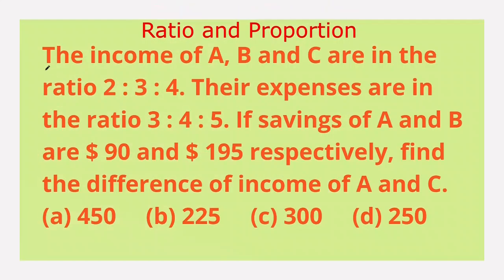Next question: the income of A, B and C are in the ratio 2:3:4. Their expenses are in the ratio 3:4:5. If savings of A and B are $90 and $195 respectively, find the difference of income of A and C. Options: A 450, B 225, C 300, D 250.